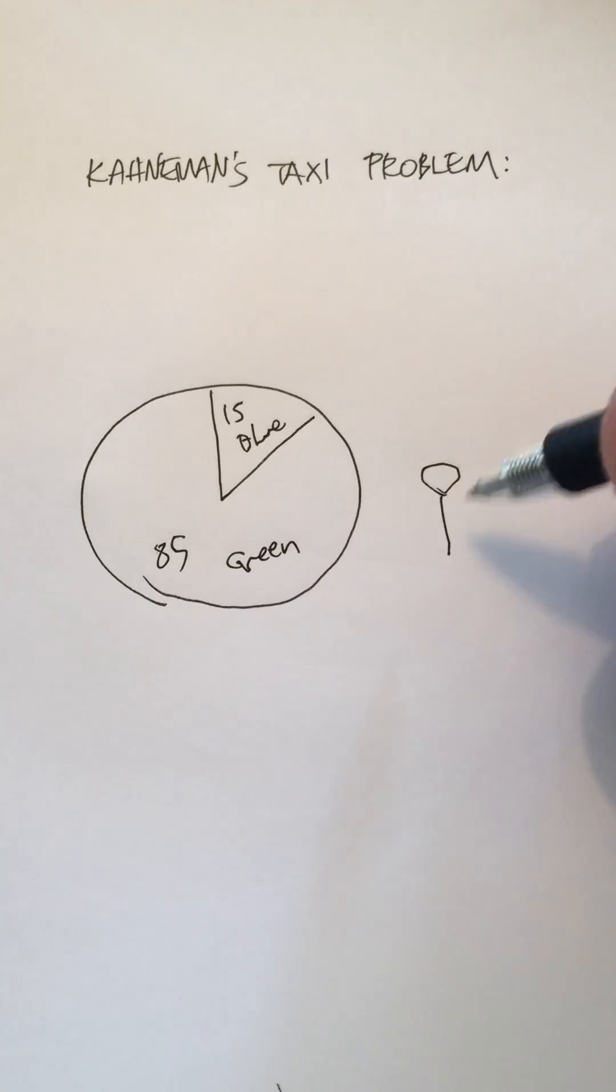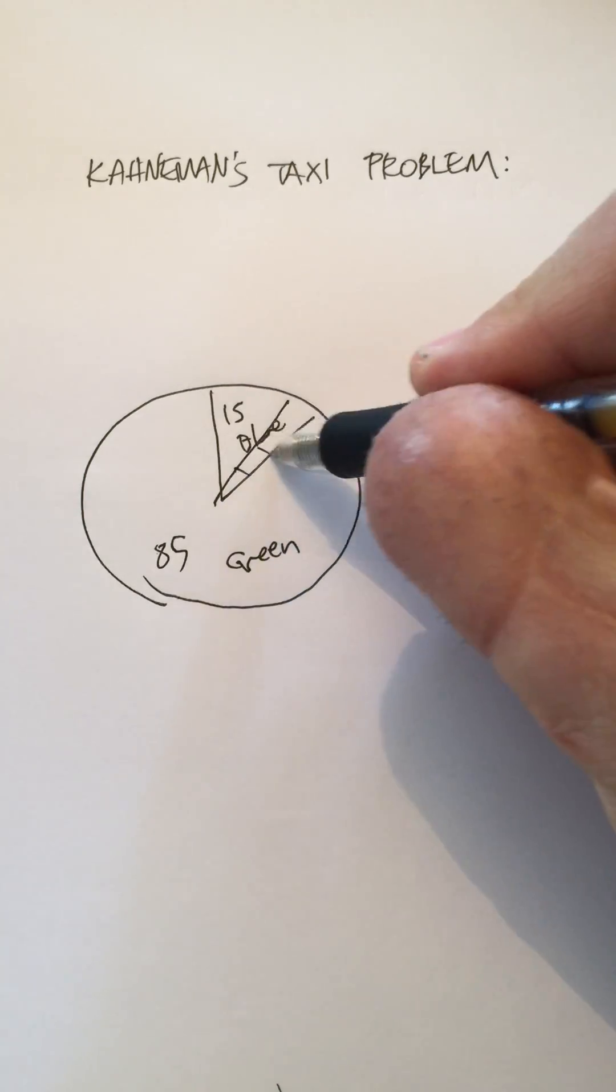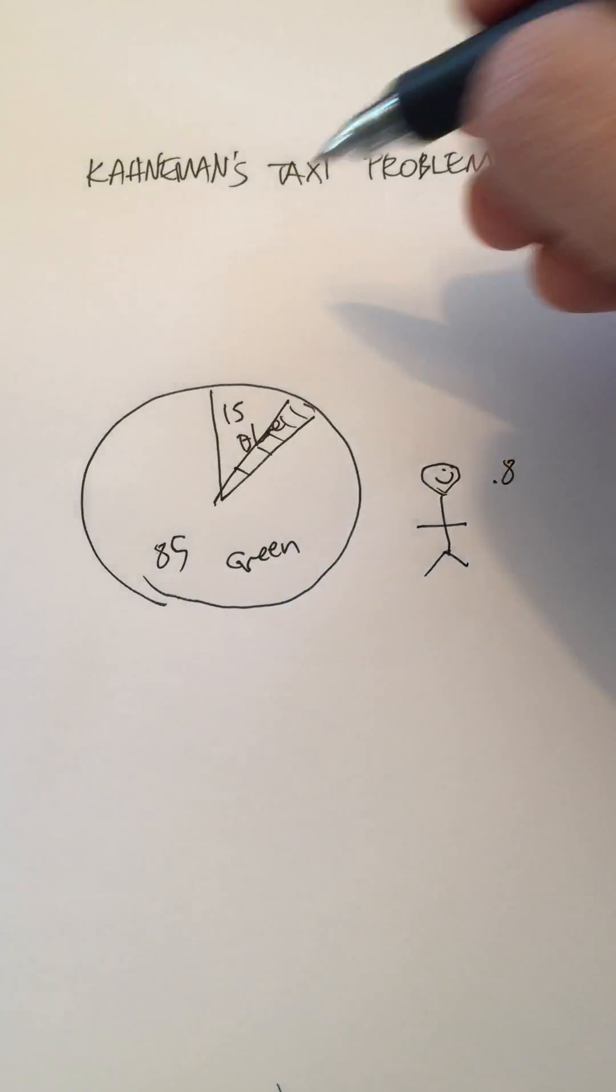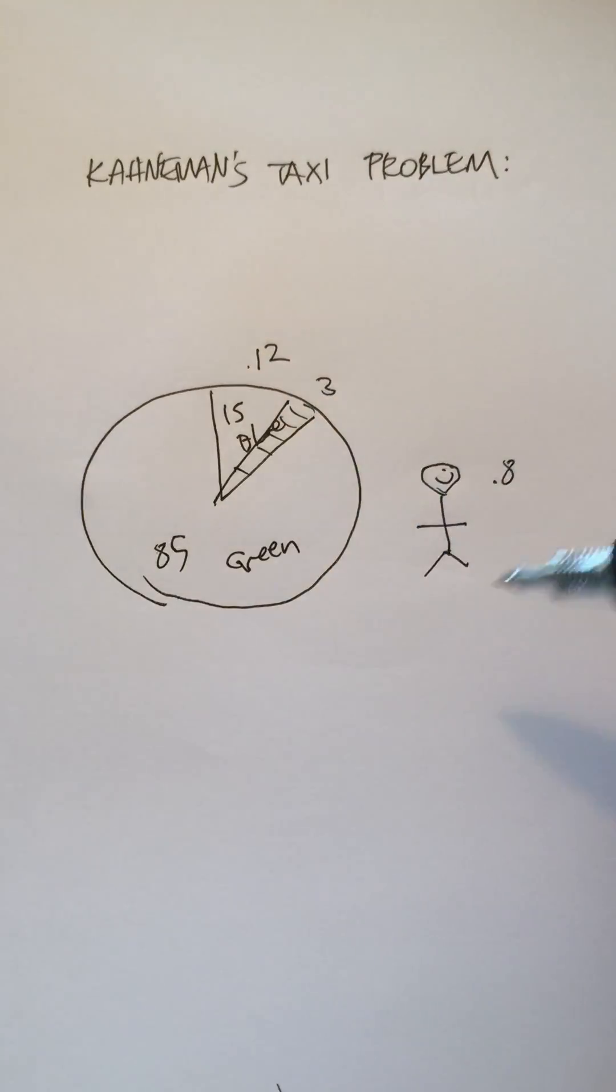We have an evaluator who has an 80% accuracy rate, so that means when the evaluator looks at these blue taxis he'll get 20% of them wrong, meaning that totally he will get 12% right and 3% wrong.